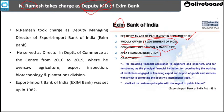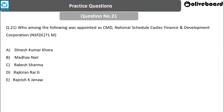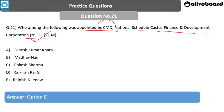Next question: Who was recently appointed as the CMD of the National Scheduled Castes Finance and Development Corporation (NSFDC)? Options: Dinesh Kumar Khara, Madavan Nair, Rajesh Sharma, Raj Kiran Rai, or Rajneesh Kumar Jha. The answer is Rajneesh Kumar Jha, who was recently appointed as CMD of NSFDC.